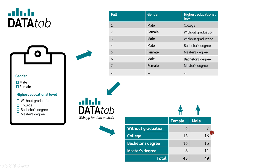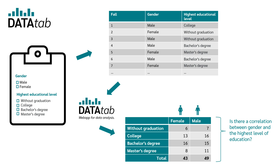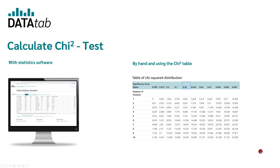Now we want to know whether gender has an influence on the highest educational level. Does it make a difference if I'm female or male in terms of the highest educational level I have? In other words, is there a relationship between gender and the highest educational level? In order to answer this question, we use the chi-square test. Now there are two ways to calculate the chi-square test: either we use a statistical software like DataTab, or we calculate the chi-square test by hand.